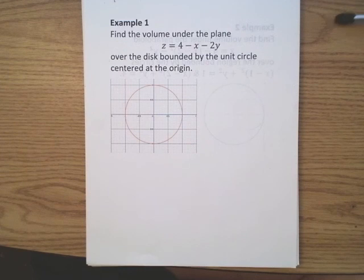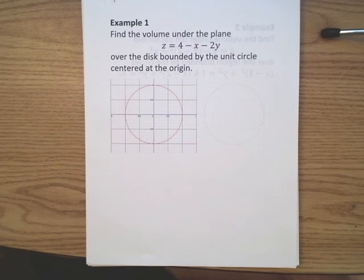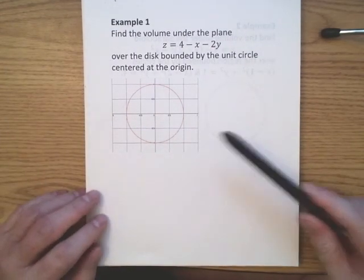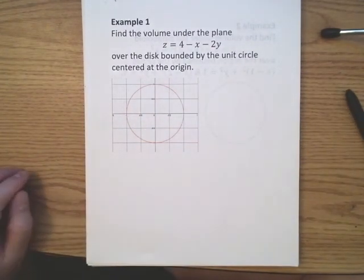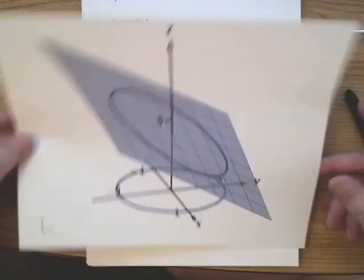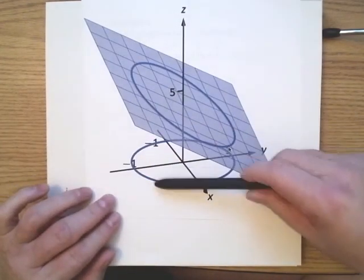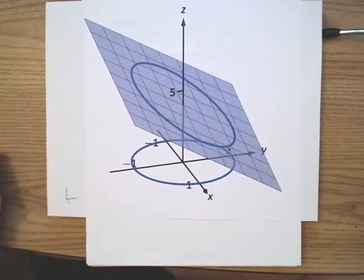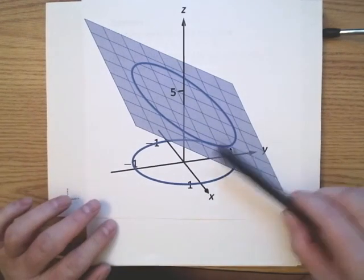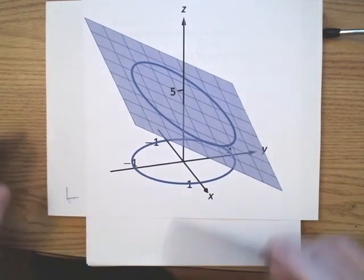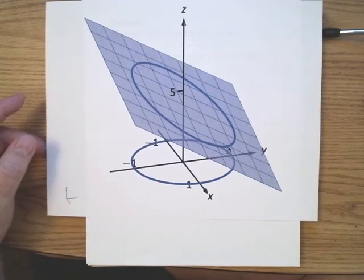Let's start looking at some problems concerning double integrals involving polar coordinates. Example one: find the volume under the plane z equals four minus x minus two y over the disk bounded by the unit circle centered at the origin. When they refer to disk, they mean the interior of the circle. The plane is positive for all values of x and y in that disk.